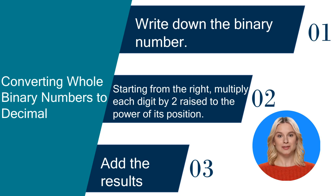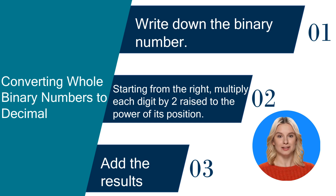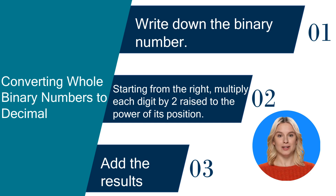A binary number is a number expressed in the base 2 numeral system, which uses only two symbols: 0 and 1. Here's a step-by-step process. Step 1: Write down the binary number. Step 2: Starting from the right, multiply each digit by 2 raised to the power of its position. Step 3: Add the results together.